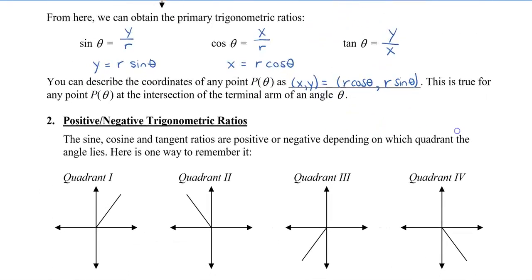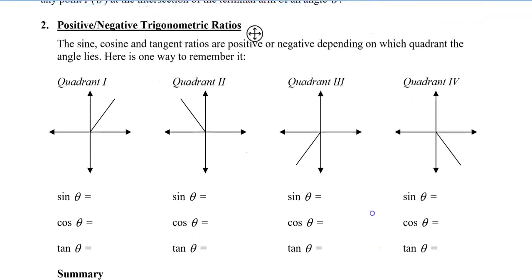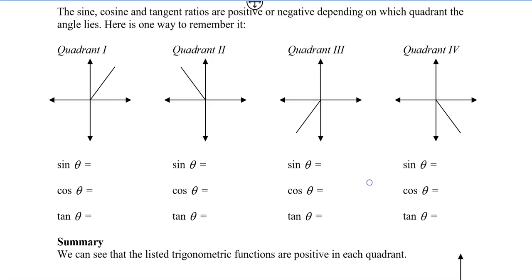Before we go on to the reciprocals and examples, let's take a look at where sine, cos, and tan are positive and negative, and that depends on which quadrant the angle lies in. I'm going to show you how to find where each is positive and negative, and then introduce a mnemonic device.